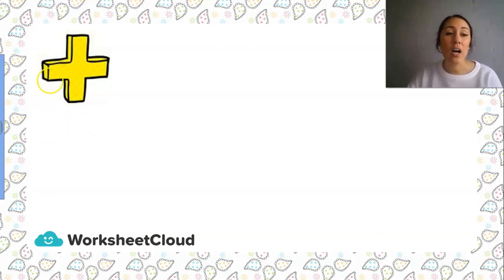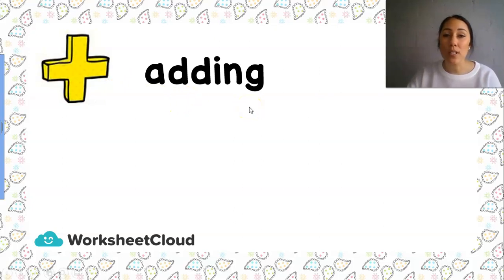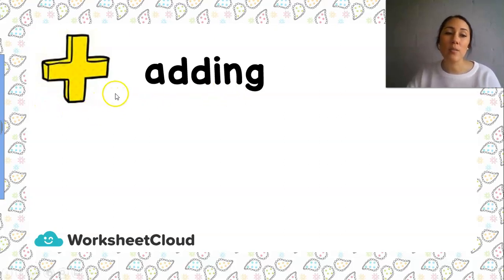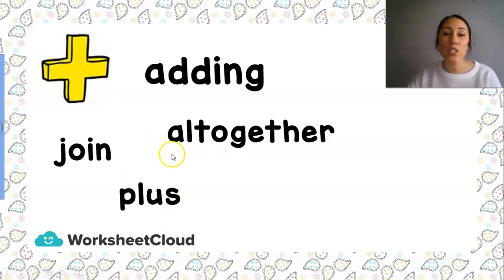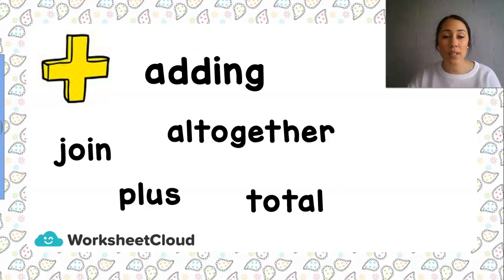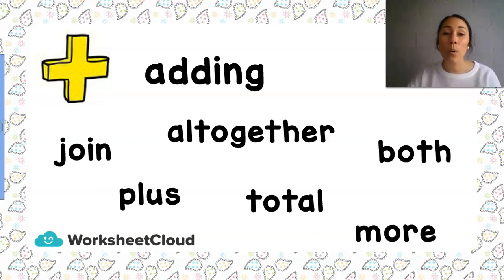But today we are only going to look at how we add — we plus — or we subtract — we minus. It's very important that when we do our story sums, there are some clue words to tell us what kind of story sum it is. Is it a plus story sum or a minus story sum? When we add things together, the clue words could be: join, plus, all together, total, both, or more.